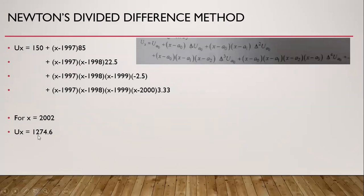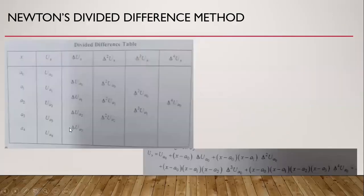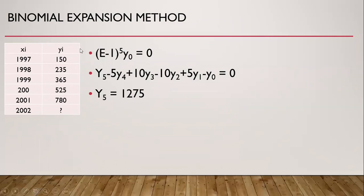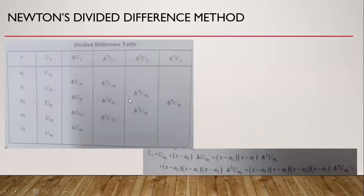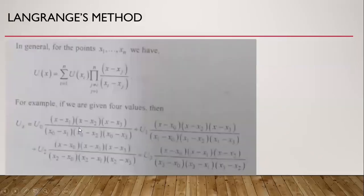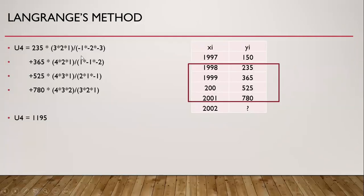This is very similar to demand which we have forecasted from the binomial expansion method - it was 1275 and here it is 1274. Then this is Langrange method. In the Langrange method this is the general formula, and this is the specific formula when we have four given values and we need to calculate the fifth value. I have taken the similar example as previously, and I have taken only the recent most four values to calculate the fifth value. So the demand for the year 2002 comes out to be 1195, and this is very similar to the demand which we have calculated from the previous two techniques.